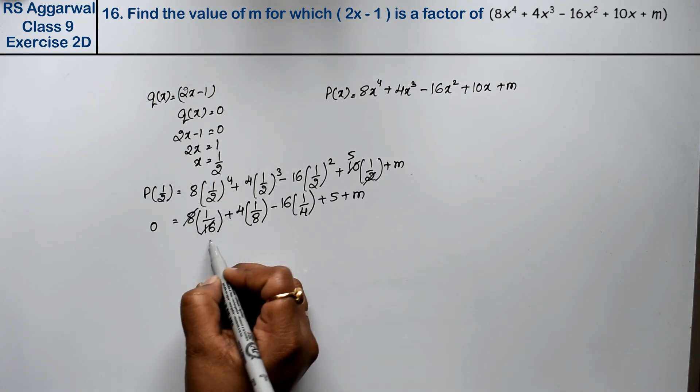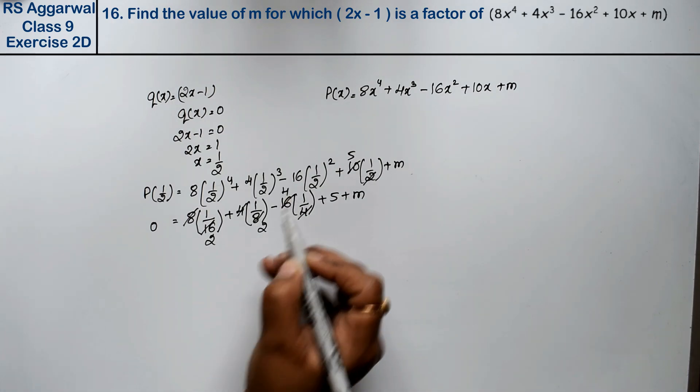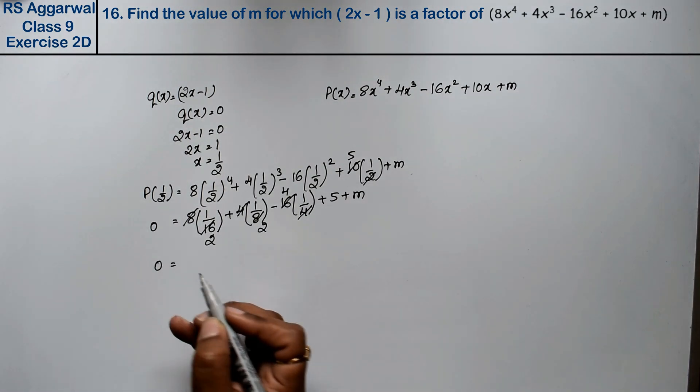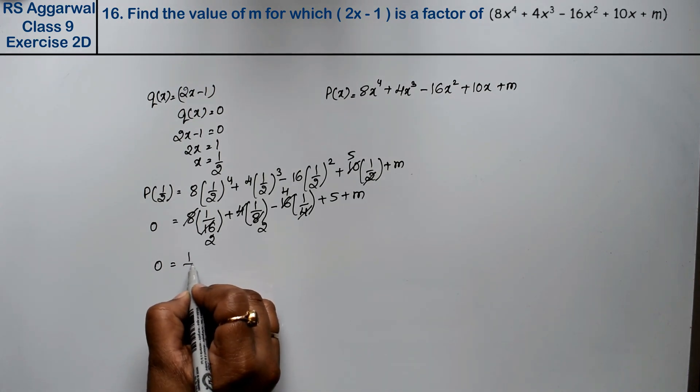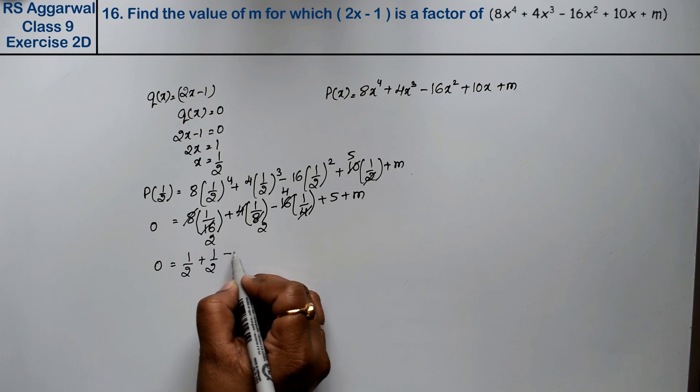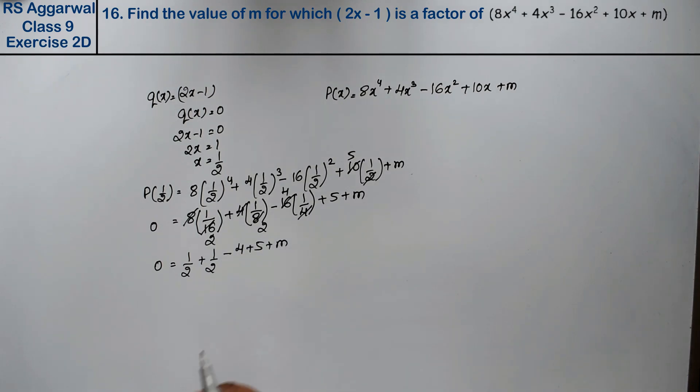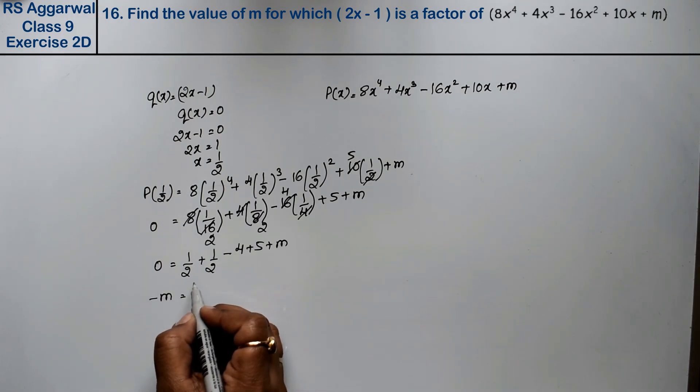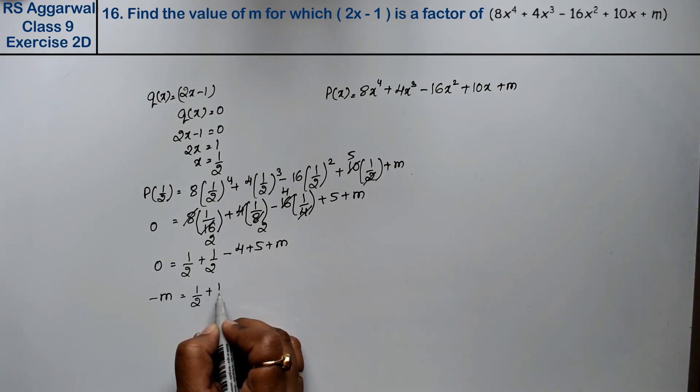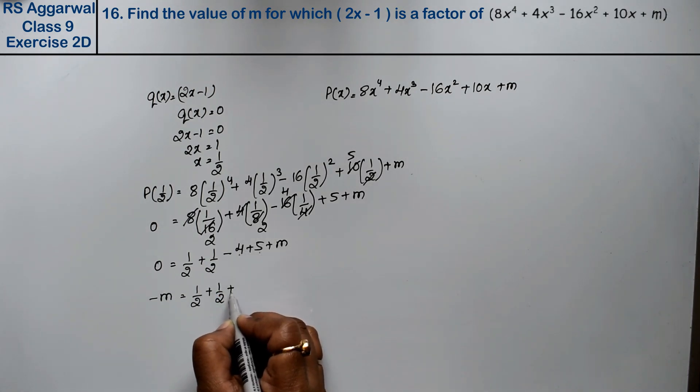Simplifying: 8 upon 16 is 1 upon 2, 4 upon 8 is 1 upon 2, 16 upon 4 is 4. So here we have 0 equals 1 upon 2 plus 1 upon 2 minus 4 plus 5 plus M. Moving M to the other side gives minus M.